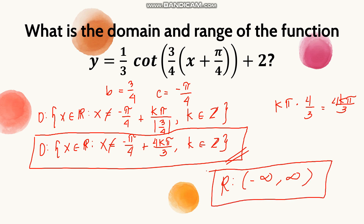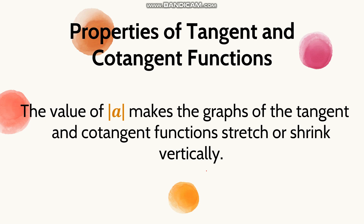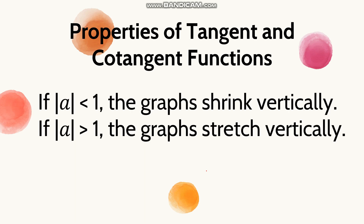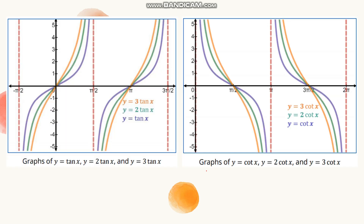For tangent and cotangent functions, we still have amplitude, given by the absolute value of a. This determines vertical stretch or shrink. If |a| is less than 1, the graphs shrink vertically. If |a| is greater than 1, the graphs stretch vertically. For example, with y = tan(x), 2tan(x), and 3tan(x), as the value of a increases, the graph stretches vertically and loses some of its curvature.